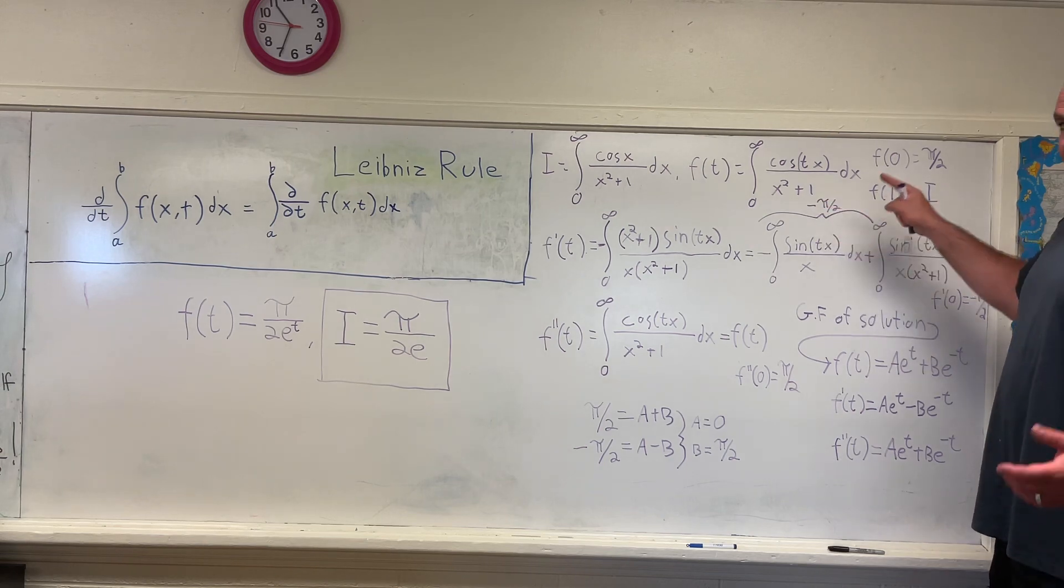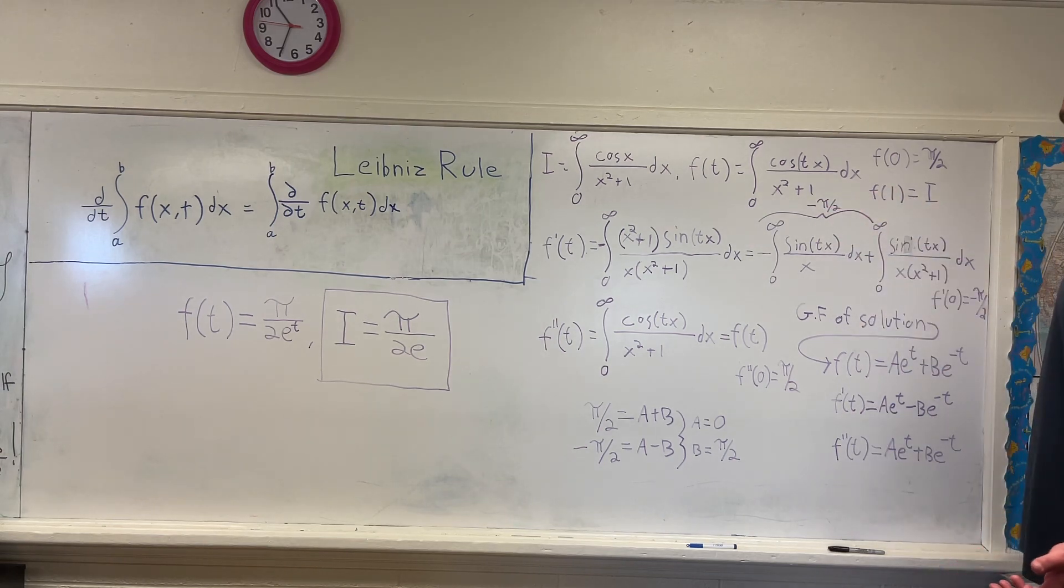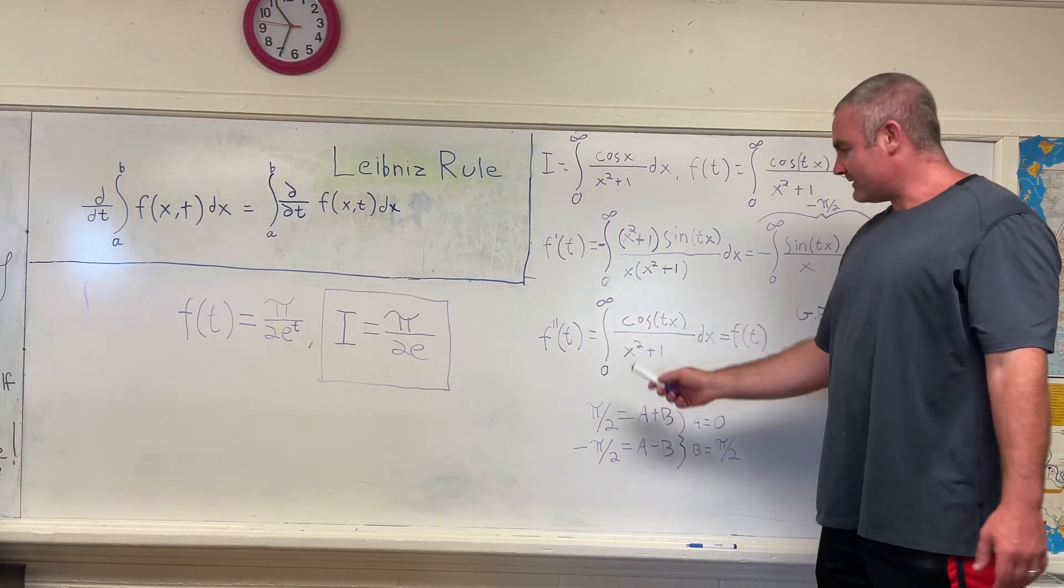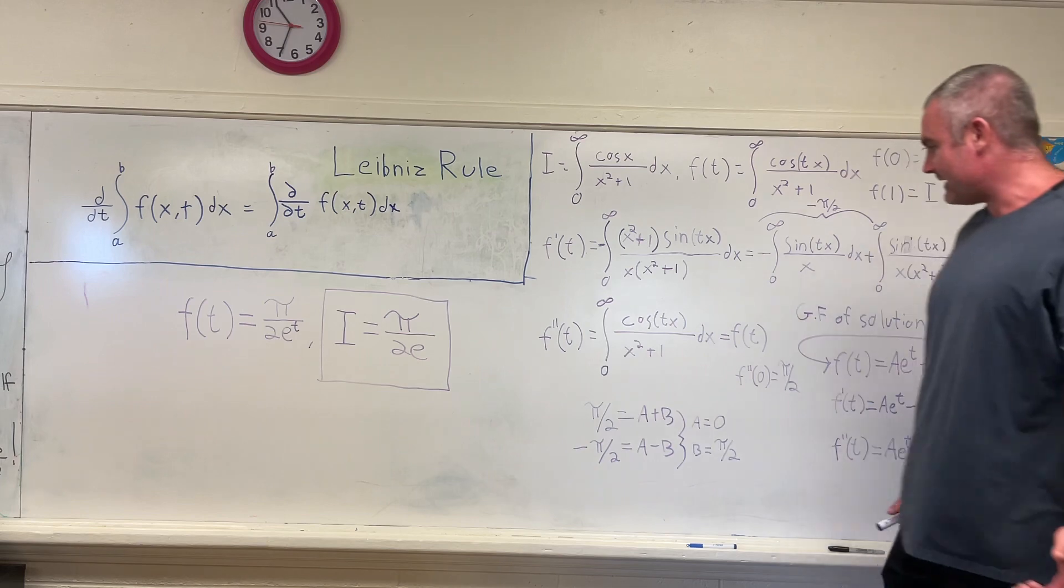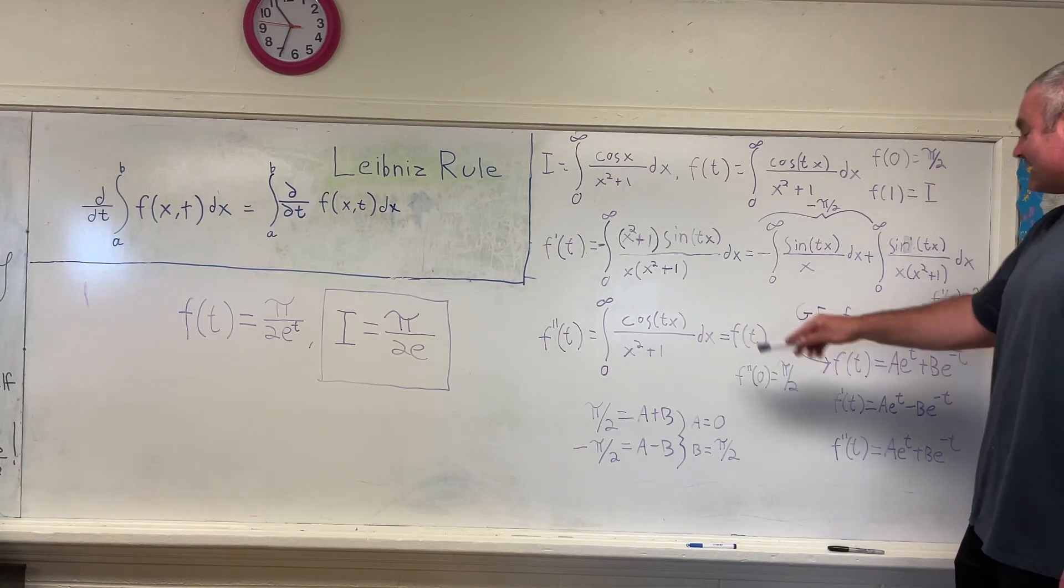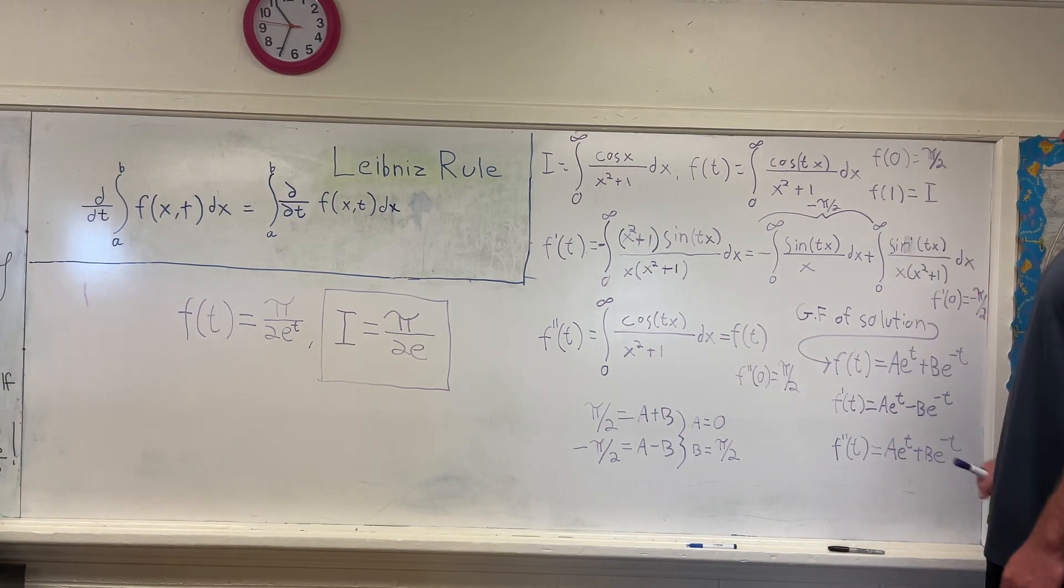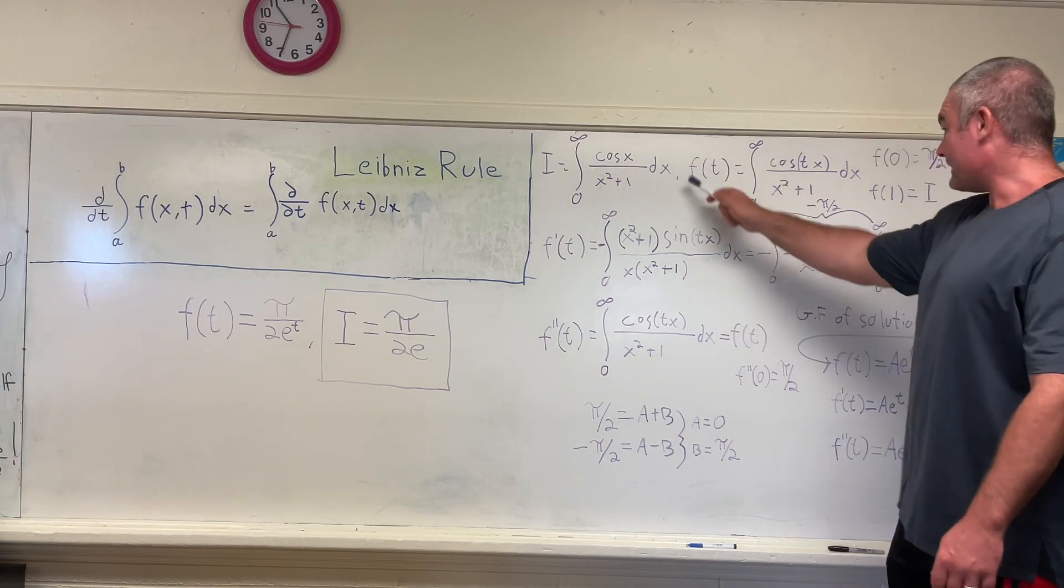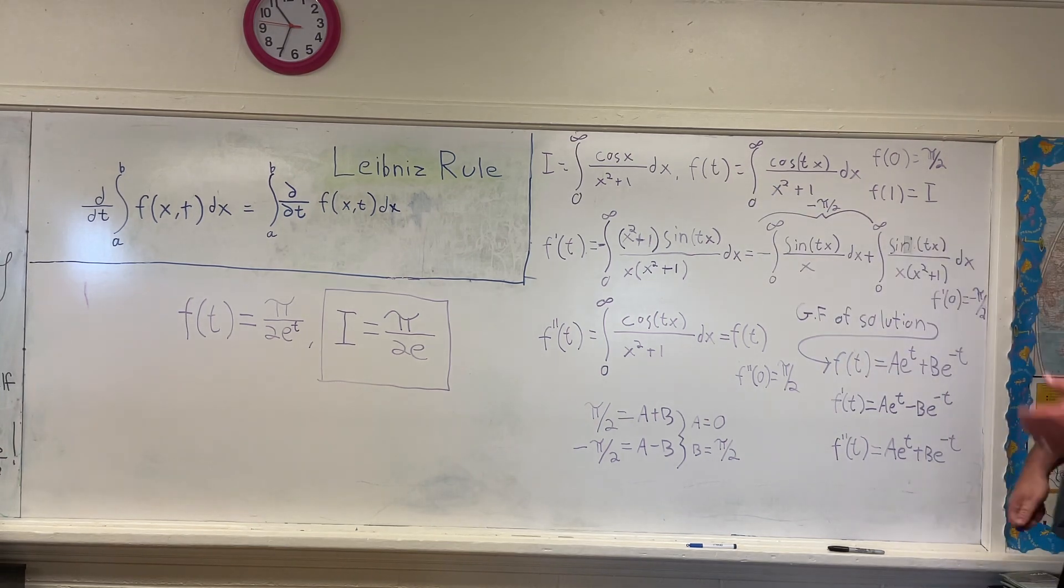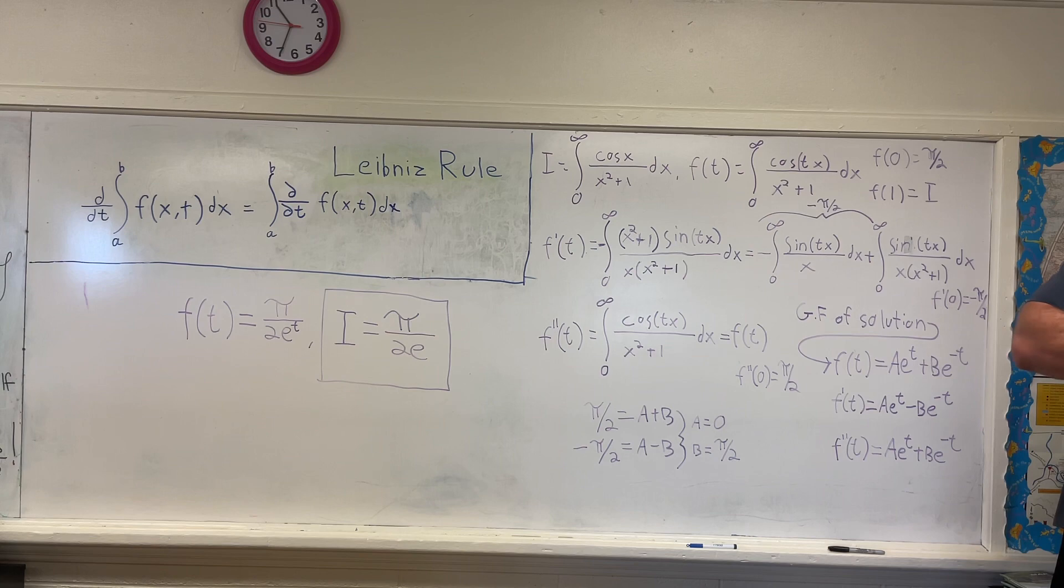This is a constant, so it drops out when you differentiate it. So we're really just taking the partial derivative with respect to t of this thing right here. And what you get when you do that is that f double prime of t is equal to the integral from 0 to infinity of cosine of tx over x squared plus 1 dx, which is exactly equal to f of t. You can see that right here.